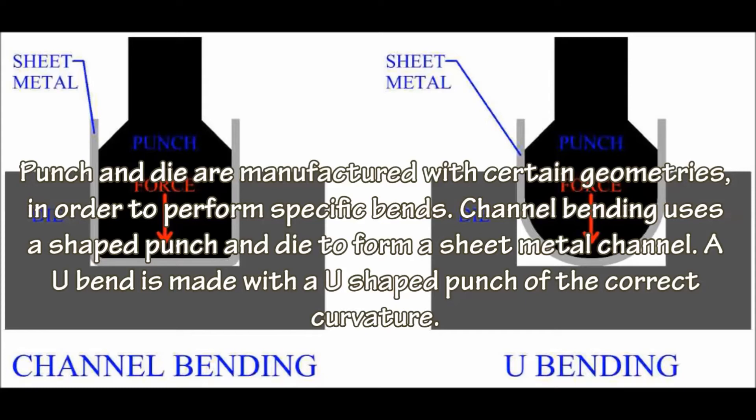Channel bending and U-bending use punch and die manufactured with specific geometries to perform particular bends. Channel bending uses a shaped punch and die to form a sheet metal channel, while a U-bend is made with a U-shaped punch of the correct curvature.